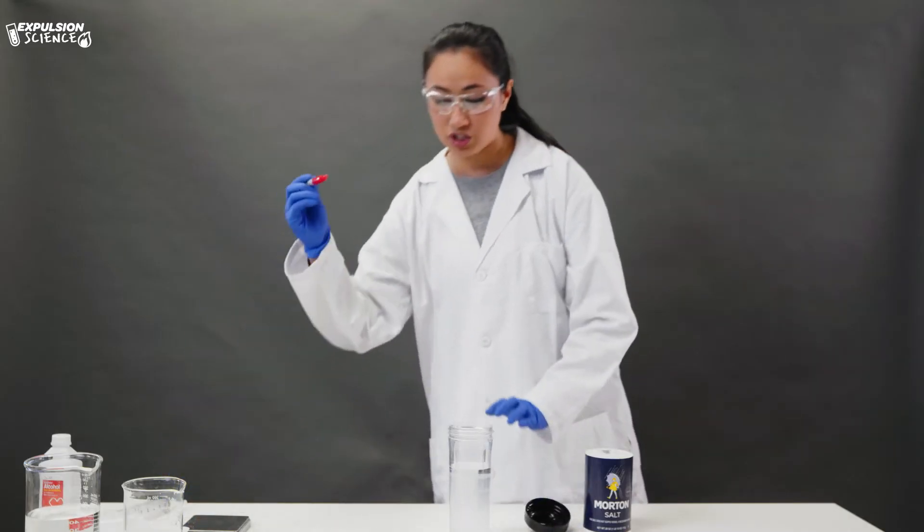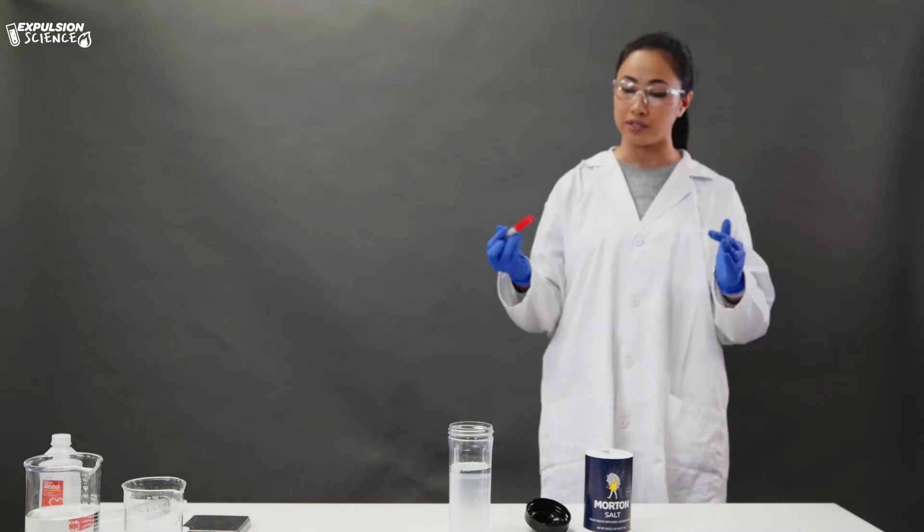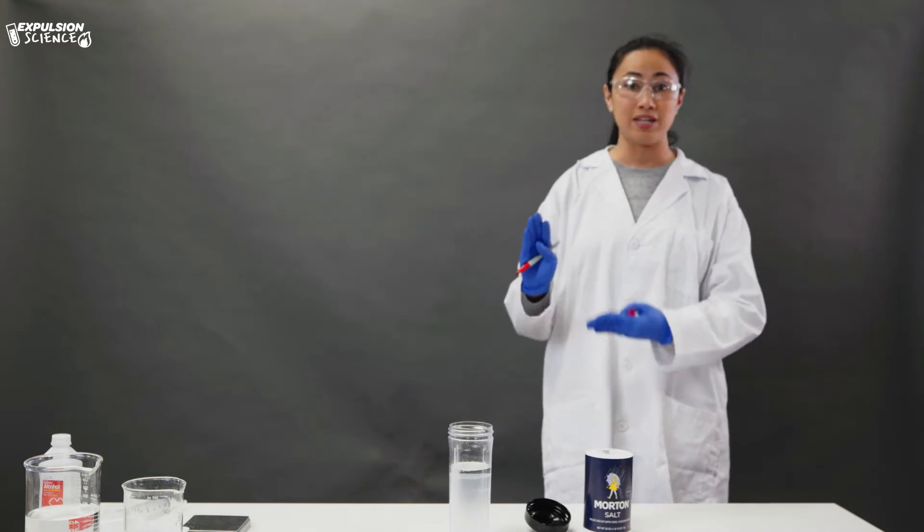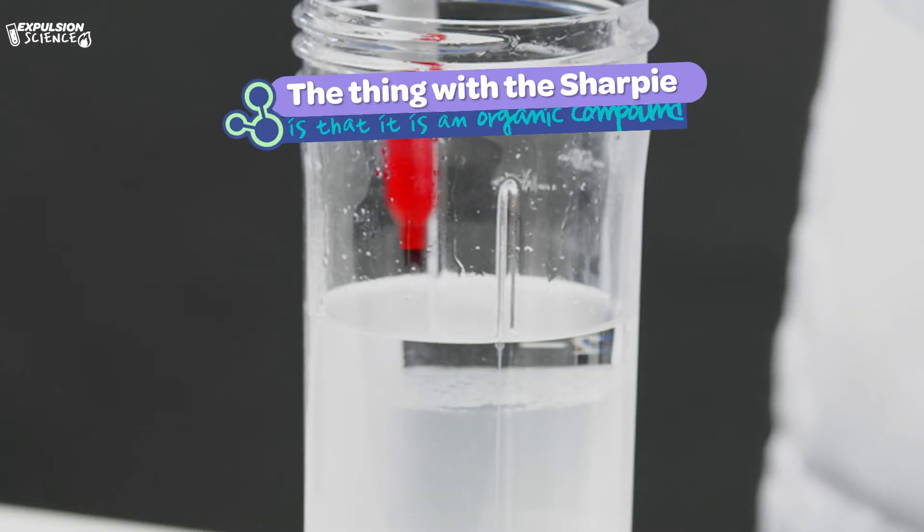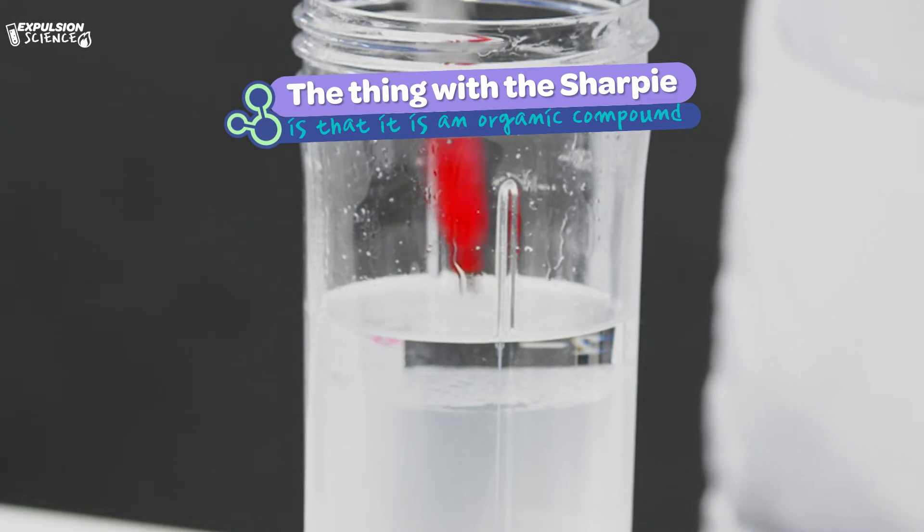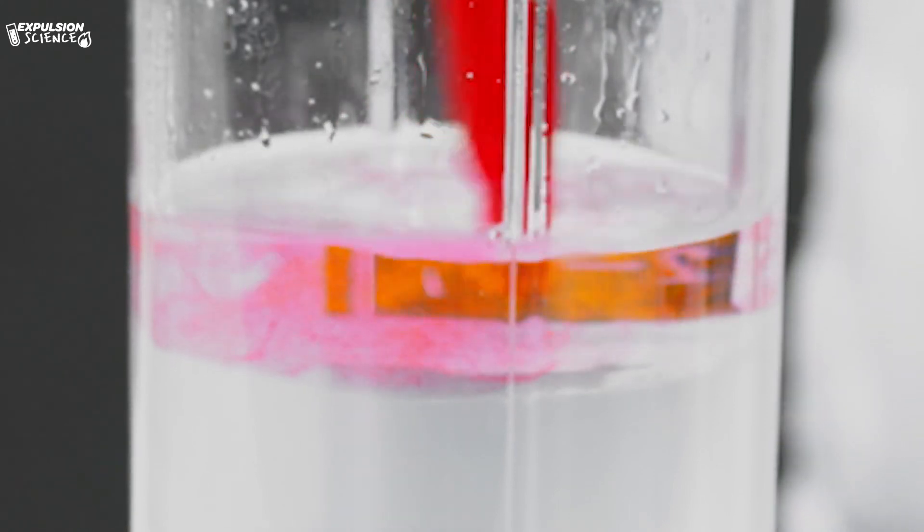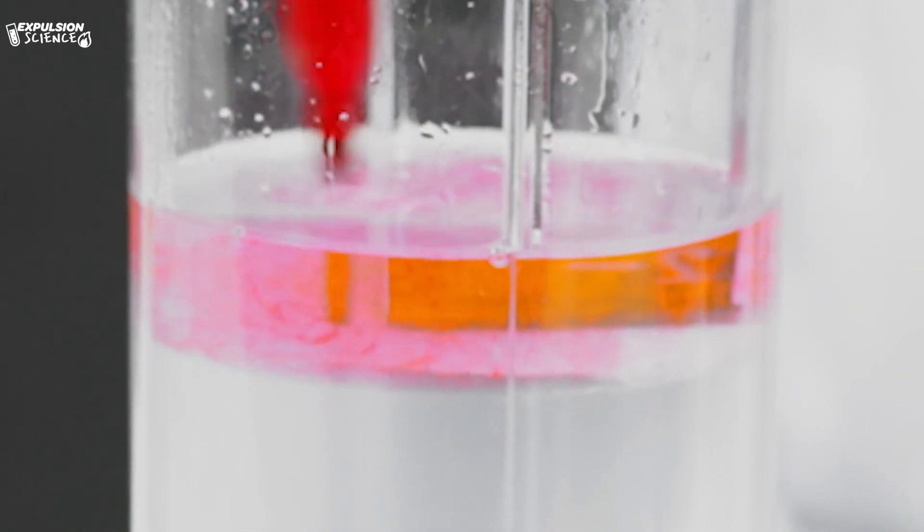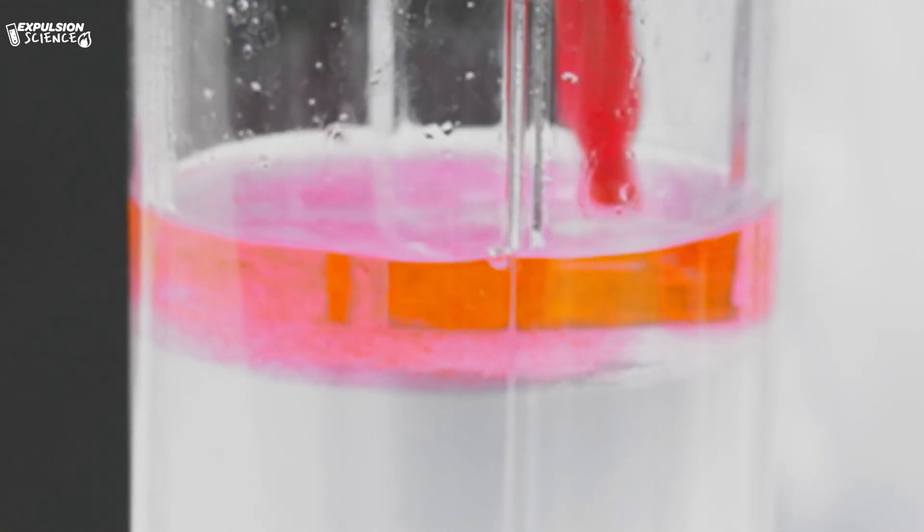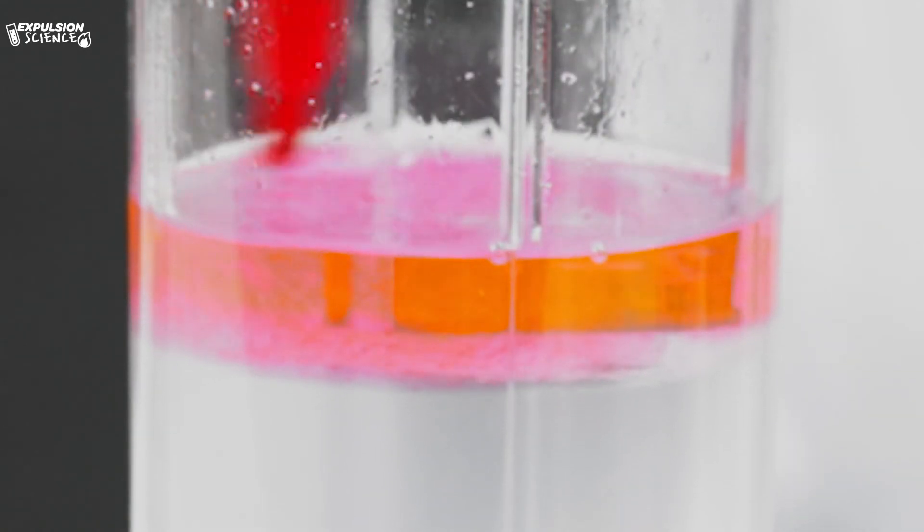We are going to use this Sharpie just to add some color to this mixture that we've created. The thing with the Sharpie is that it is an organic compound and it's able to dissolve in alcohol. We're just going to add just a little bit. So now you can really see that layering more distinctly. Some of the Sharpie that's dissolved in the alcohol has stayed where it's at, and that is because again the Sharpie can dissolve in alcohol.